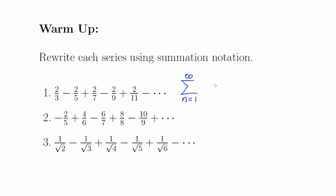Also notice that we have alternating signs, so we want to multiply by some power of negative 1. Since the first term is positive, we'll make it negative 1 to the power n plus 1.